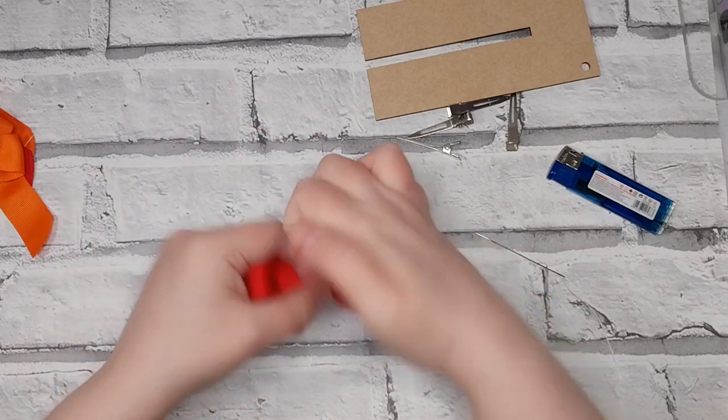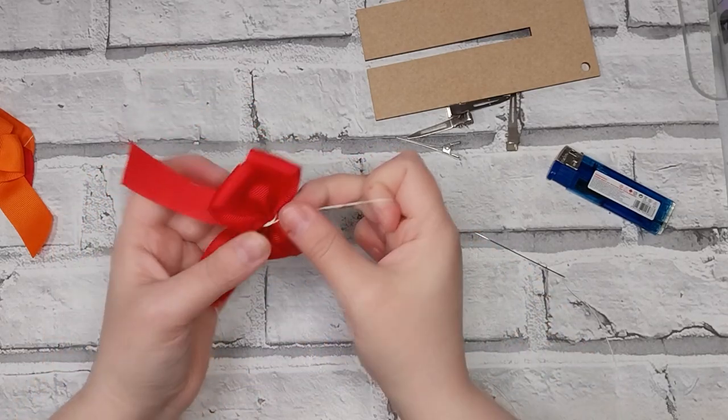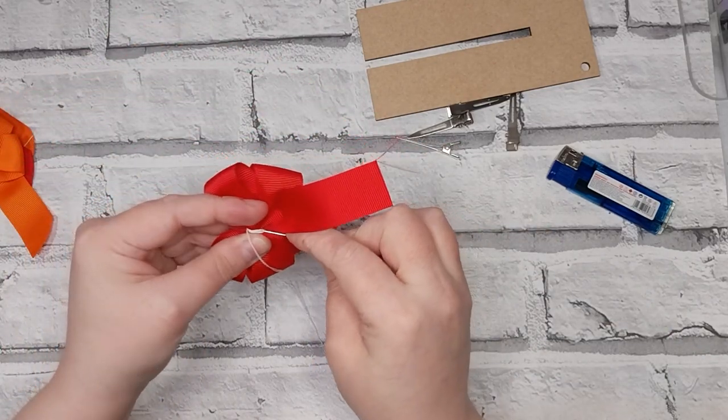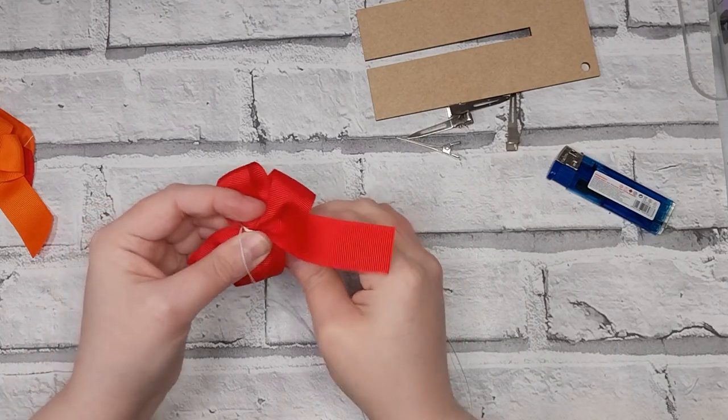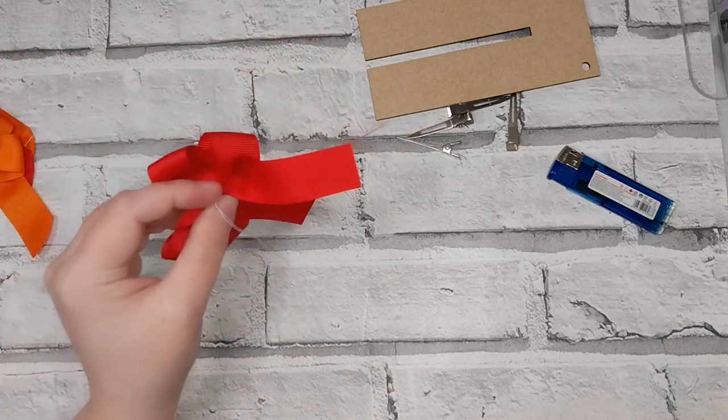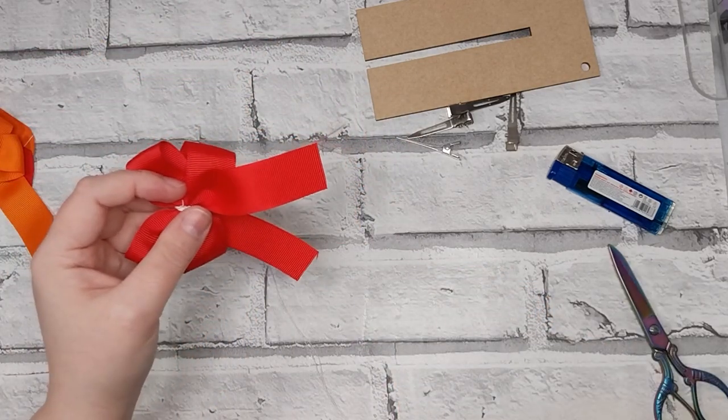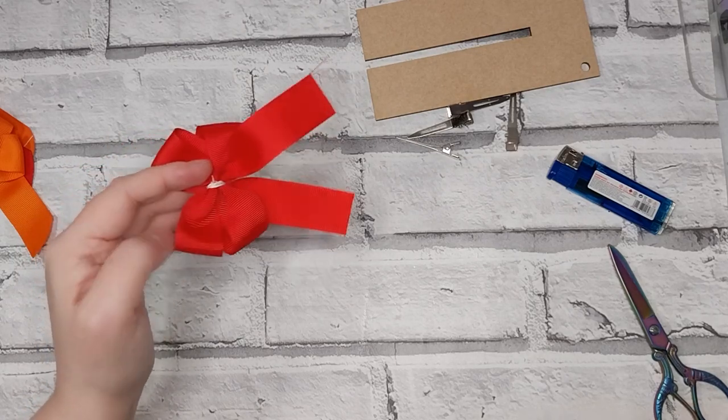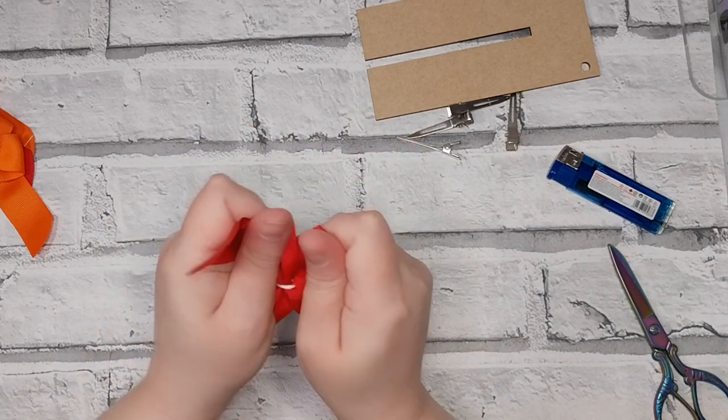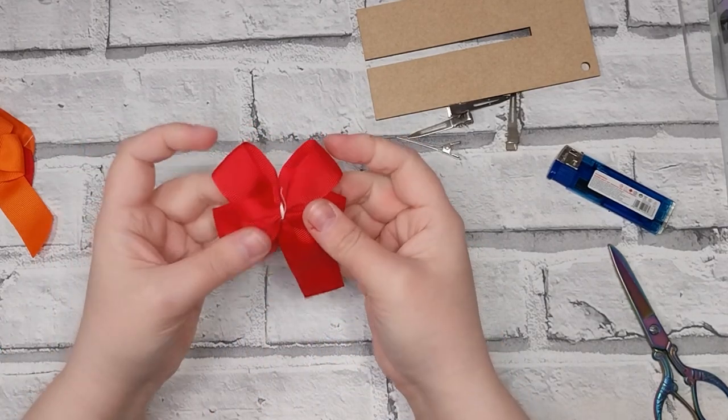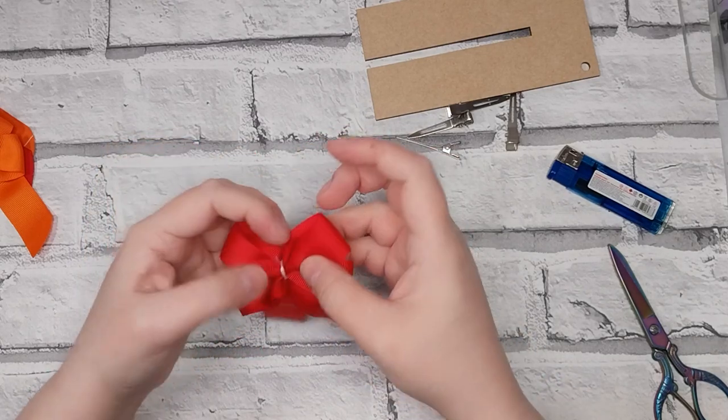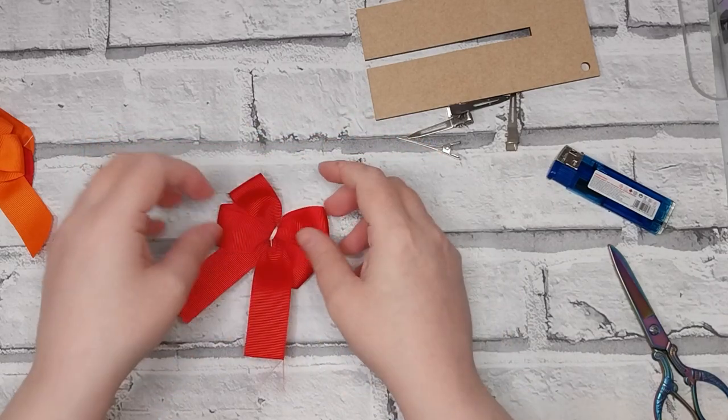So cinch that nice and tight and wrap that round, and then stitch off in the back however you normally do. That's what you end up with. Now I always give mine a little twist and tug to give it more a squared look.